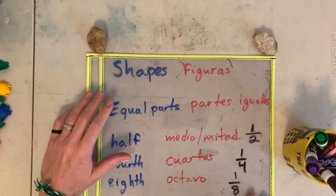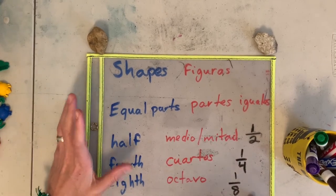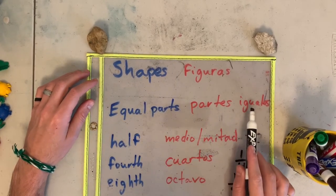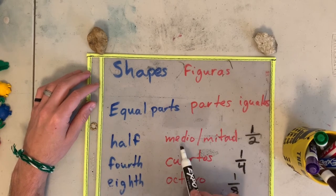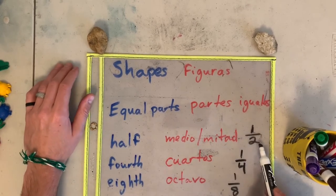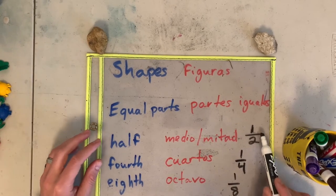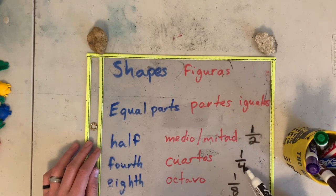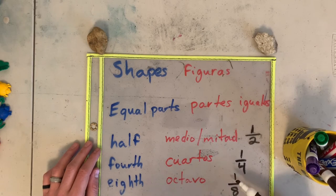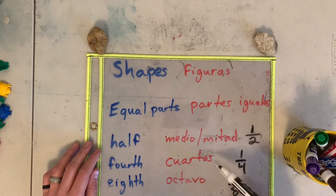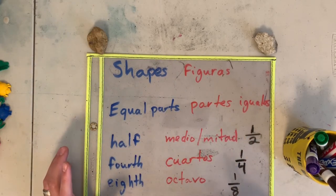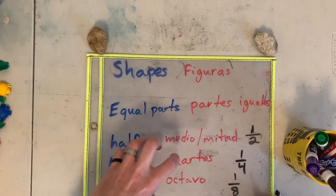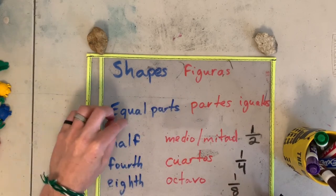Let's review the vocabulary words that we learned yesterday about shapes. Shapes in Spanish is figuras. Equal parts is partes iguales. Half means medio or mitad, and this is the number form, the standard form of one half: un medio. Then we have fourths. Cuartos means one fourth, un cuarto. Eighth, octavo, one eighth, un octavo. Esta parte es muy importante porque son las vocabularios que utilizamos cuando dividimos las partes iguales. This part is very important because these are the vocabulary words that we use when we divide in equal parts the shapes.